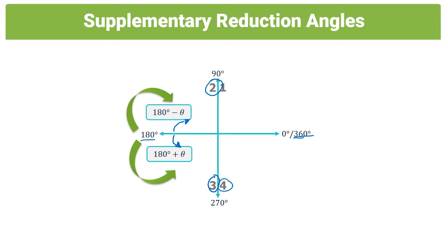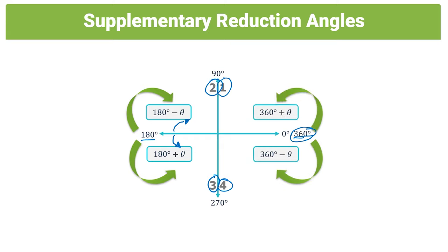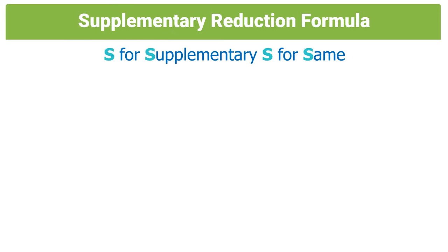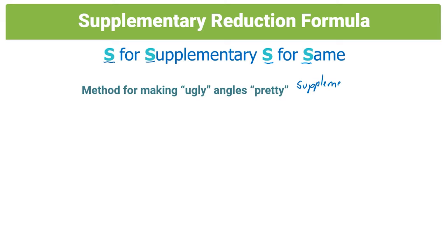In the fourth quadrant, any angle would be less than 360 degrees, so it would be 360 minus theta — 360 pull back. And in the first quadrant, an angle would be 360 plus theta — 360 push forward. The memory technique I like to use for supplementary angles is S for supplementary, S for same, and this will link with the method later on.